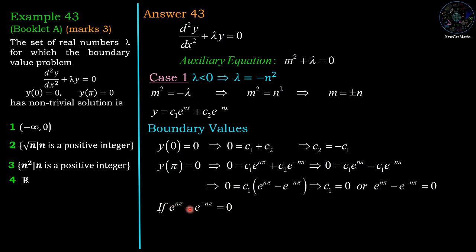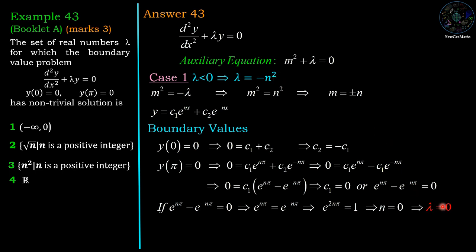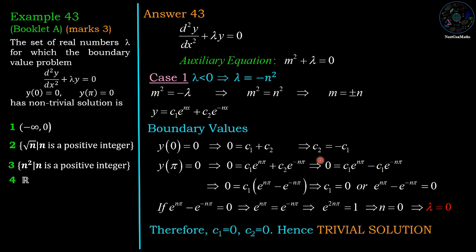Since the product equals zero, either c₁ = 0 or eⁿᵖ − e⁻ⁿᵖ = 0. If eⁿᵖ − e⁻ⁿᵖ = 0, then e²ⁿᵖ = 1, which is only possible when n = 0, giving λ = 0. But we assumed λ < 0, so c₁ must be 0, forcing c₂ = 0 as well, giving y = 0 — a trivial solution. Therefore for λ < 0 we cannot get any non-trivial solution.